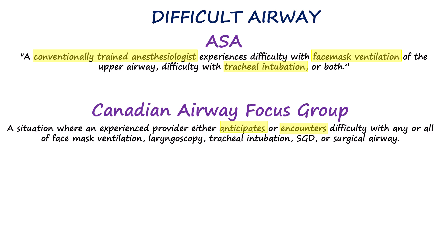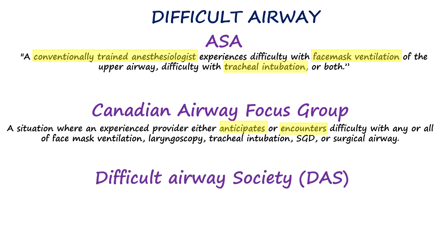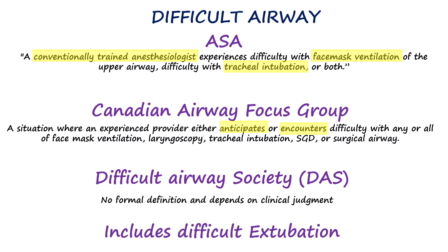The Canadian definition also covers various methods of airway support, including face mask ventilation, laryngoscopy, intubation, the use of supraglottic devices such as the laryngeal mask airway, and the potential need for a surgical airway. The Difficult Airway Society acknowledges that there is no single fixed definition of a difficult airway; they leave it to the clinical judgment of the anesthetist. Importantly, all three societies also acknowledge that difficult extubation should be considered part of the broader concept of the difficult airway.